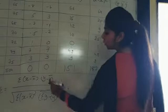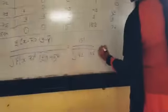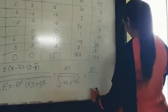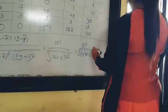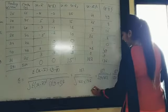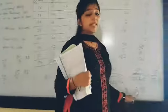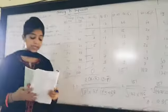Now the formula we have to put the values. Sigma x minus x bar into y minus y bar is 151 divided by x minus x bar square is 182 into y minus y bar square is 136. So the answer is 151 divided by under root 24752. So the answer is 151 divided by 157.32.